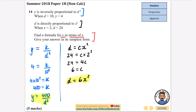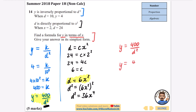The first formula has d squared but the second only has d, so I'll square d equals 6x squared. When squaring, you must square both the 6 and the x squared: 6 squared is 36, and (x squared) squared is x to the power of 4, giving d squared equals 36x to the power of 4. Substituting into y equals 400 over d squared: y equals 400 over 36x to the power of 4. Simplifying by dividing top and bottom by 4 gives y equals 100 over 9x to the power of 4.